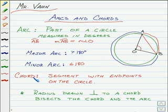Now, a chord is defined as a segment with its endpoints on the circle. So our chord in this picture is chord AB.